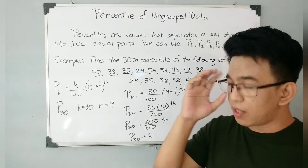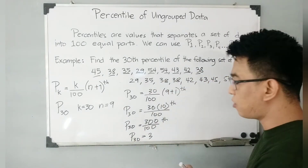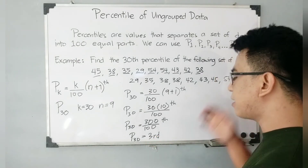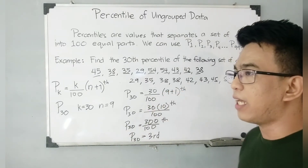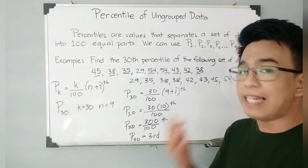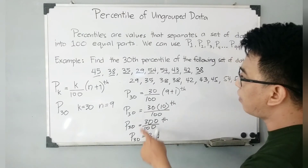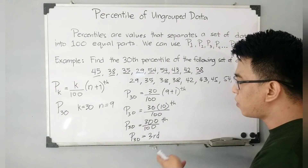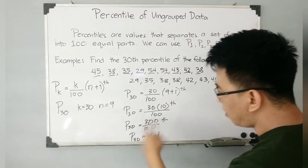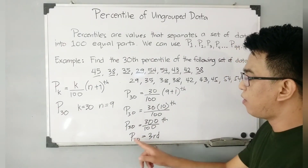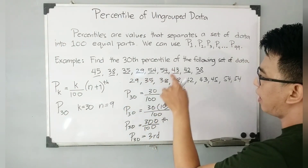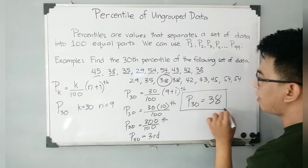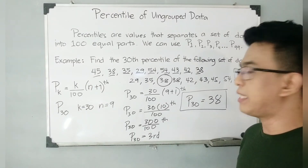Yung 3 po bang yan, yan yung mismo 30th percentile natin? No. As you can see, meron tayo itong TH. Kung 3 siya, hindi siyang TH — 3rd dapat yan. Ibig sabihin, yung ating percentile 30 ay malilocate natin siya sa pang-third, o yung pangatlo sa mga elements na ilayos mo in ascending order. So, 300 over 100 is 3, and since hanap natin yung position, kaya siya naging 3rd. Using this information na 3rd yung position ng ating 30th percentile, hanapin nyo lang dito sa inarrange nyo: 1st, 2nd, and 3rd. Ibig sabihin, P sub 30 is equal to 38.